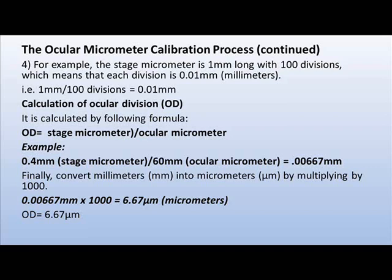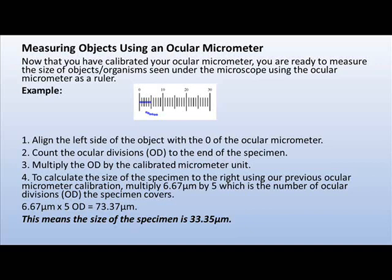Now we know how to calibrate the microscope using the ocular and stage micrometer. To measure an object using the ocular micrometer as a ruler: step 1 — align the left side of the object with the 0 of the ocular micrometer. Step 2 — count the ocular divisions (OD) to the end of the specimen. Step 3 — multiply the OD by the calibrated micrometer unit. Step 4 — using our previous calibration, multiply 6.67 by 5 OD (the number of ocular divisions the specimen covers): 6.67 × 5 = 33.35 micrometers. This means the size of the specimen is 33.35 micrometers.